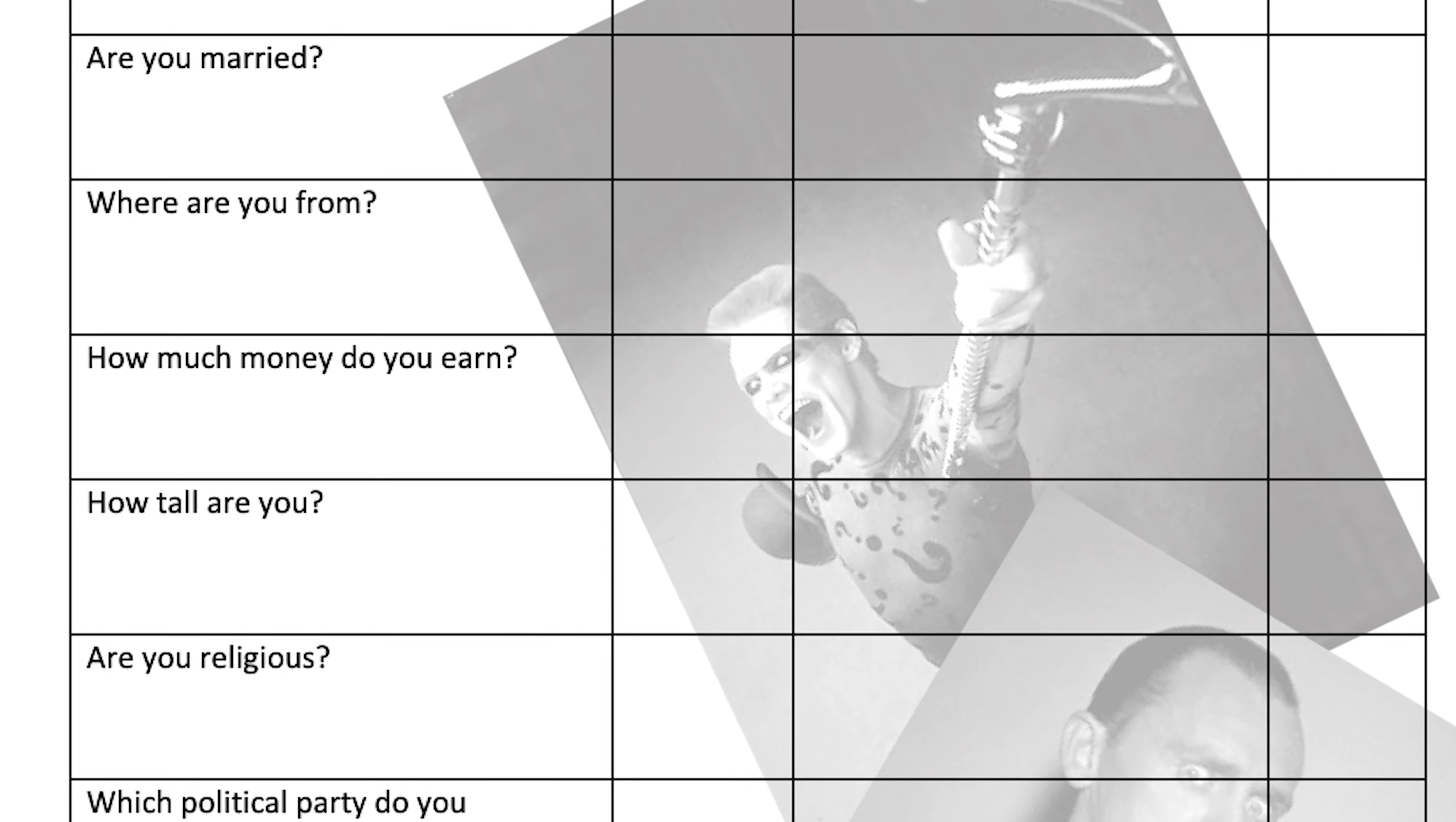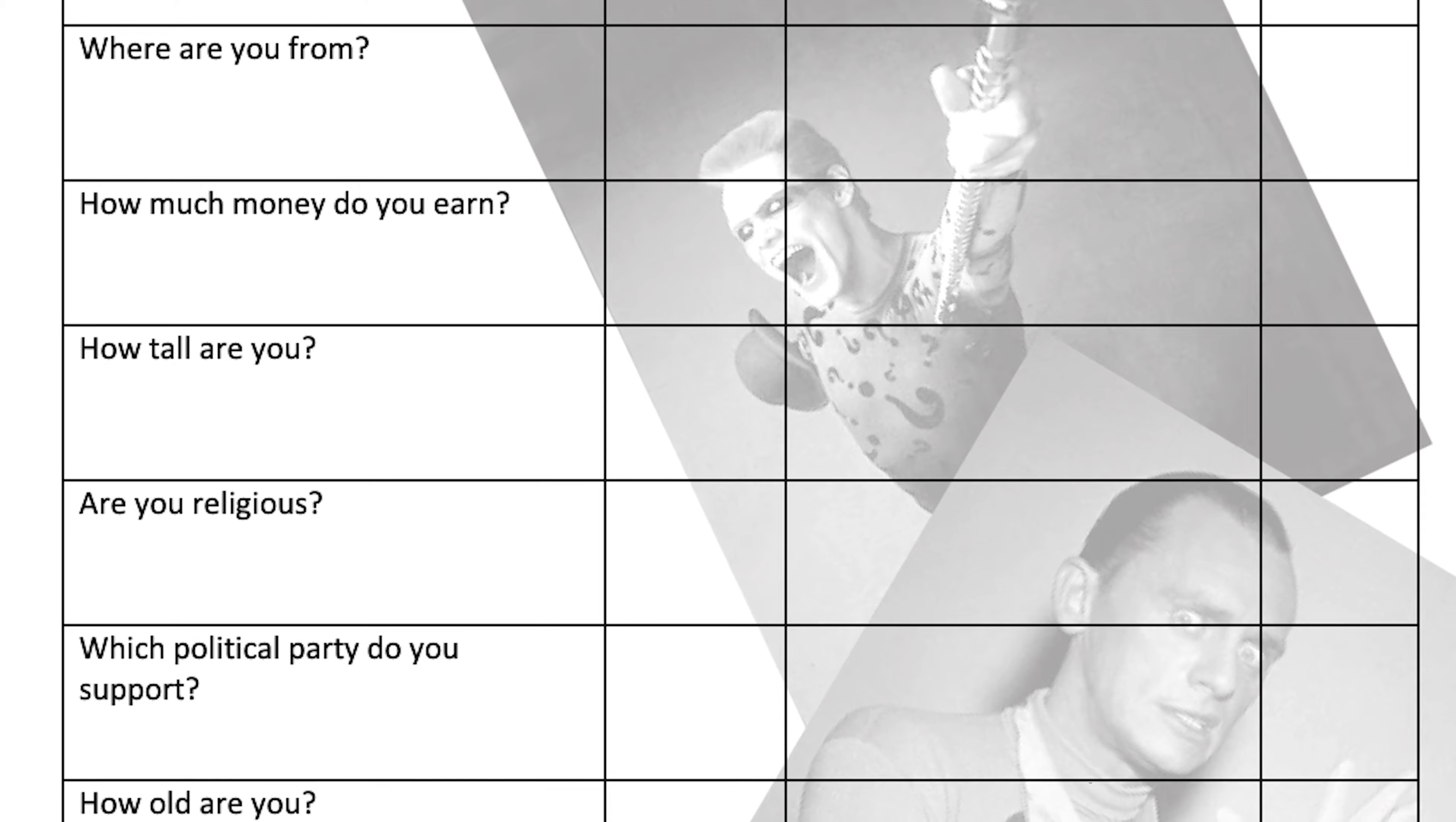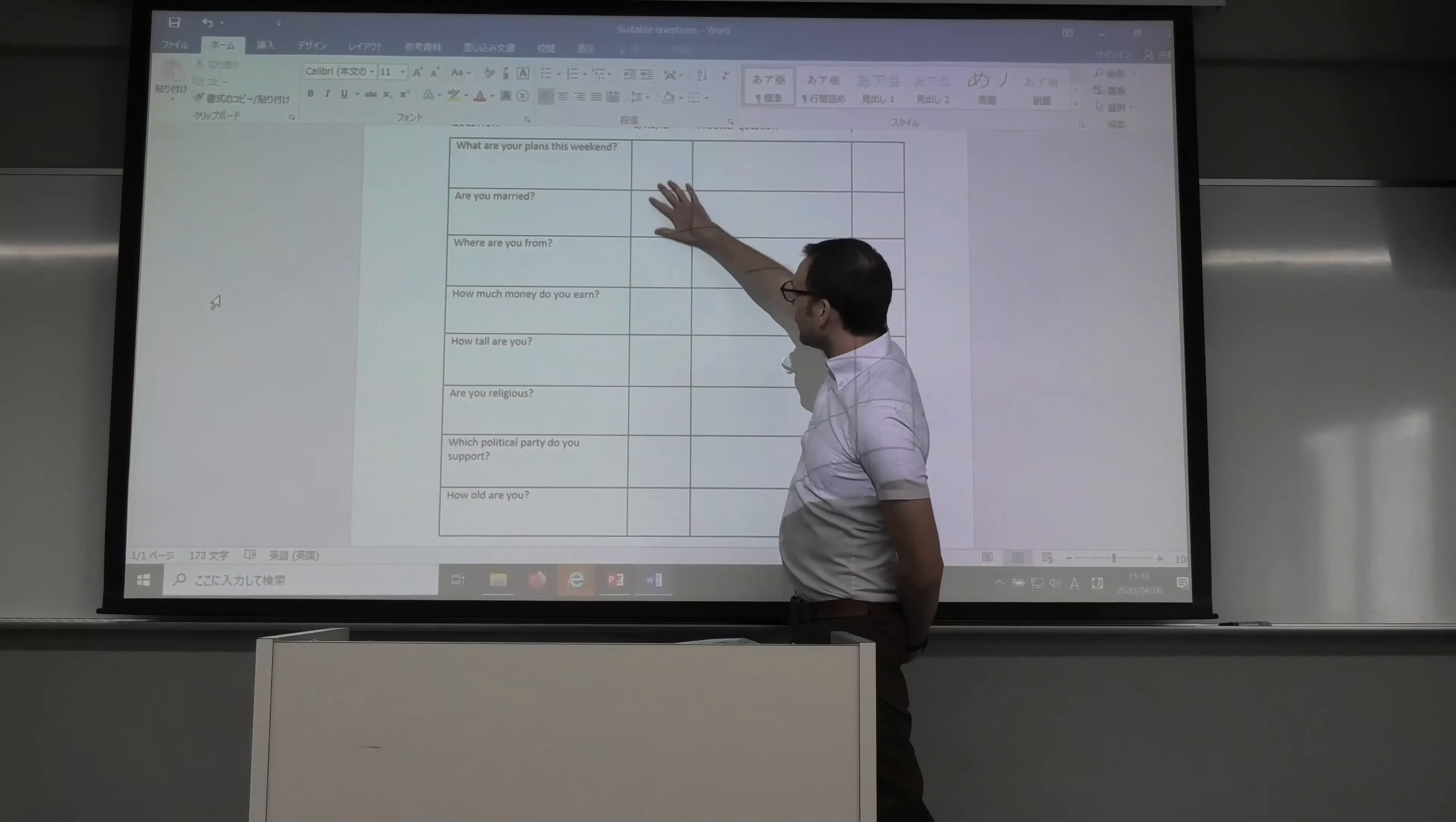Question number one: What are your plans this weekend? Are you married? Where are you from? How much money do you earn? How tall are you? Are you religious? Which political party do you support? And last up, how old are you? So what I want you to do down in this row here, please write down S for suitable if you think the question is fine.